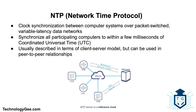NTP, or Network Time Protocol, is a networking protocol for clock synchronization between computer systems over packet-switched, variable-latency data networks. NTP is intended to synchronize all participating computers to within a few milliseconds of Coordinated Universal Time. It uses the intersection algorithm to select accurate time servers and is designed to mitigate the effects of variable network latency. NTP can maintain time within tens of milliseconds over the public internet and better than one millisecond in LANs under ideal conditions. The protocol can be used in both client-server and peer-to-peer relationships, and supplies a warning of any impending leap second adjustment but transmits no information about local time zones or daylight saving time.